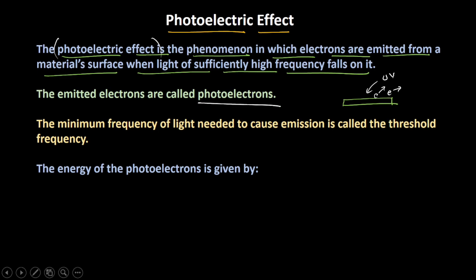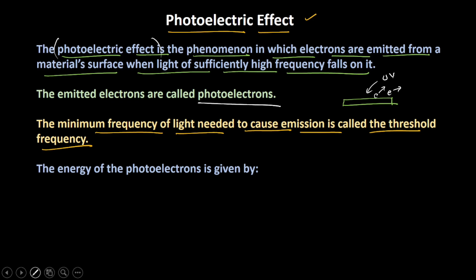One key observation in the photoelectric effect was there is a minimum frequency of light needed to cause the emission, and this is what is called the threshold frequency. What this means is that, let's say, the minimum frequency needed is 10 raised to the power 15 hertz. If the incident light has a frequency of 10 raised to the power 14 hertz, no matter how high the intensity of light is, the electrons will just not be emitted.